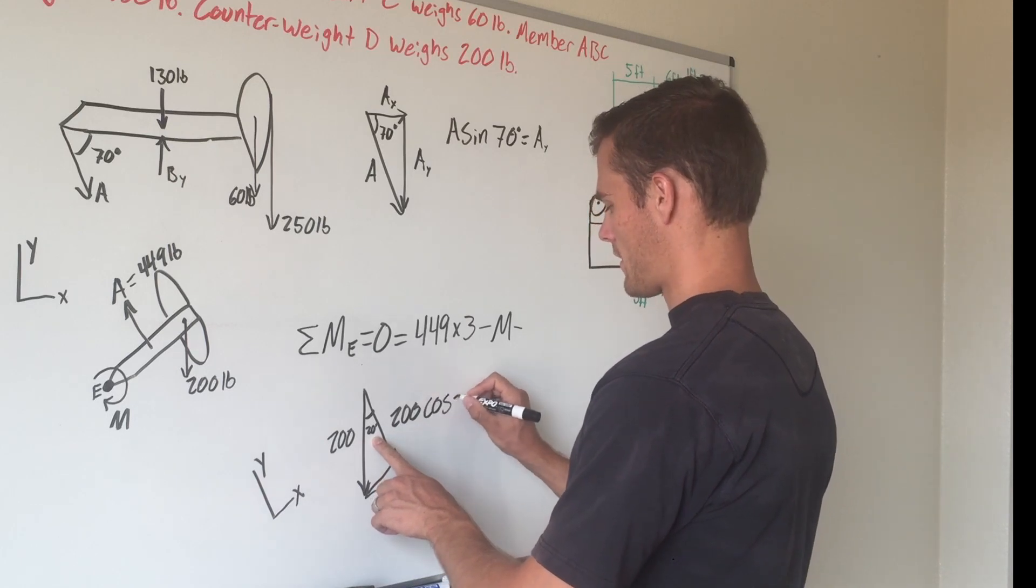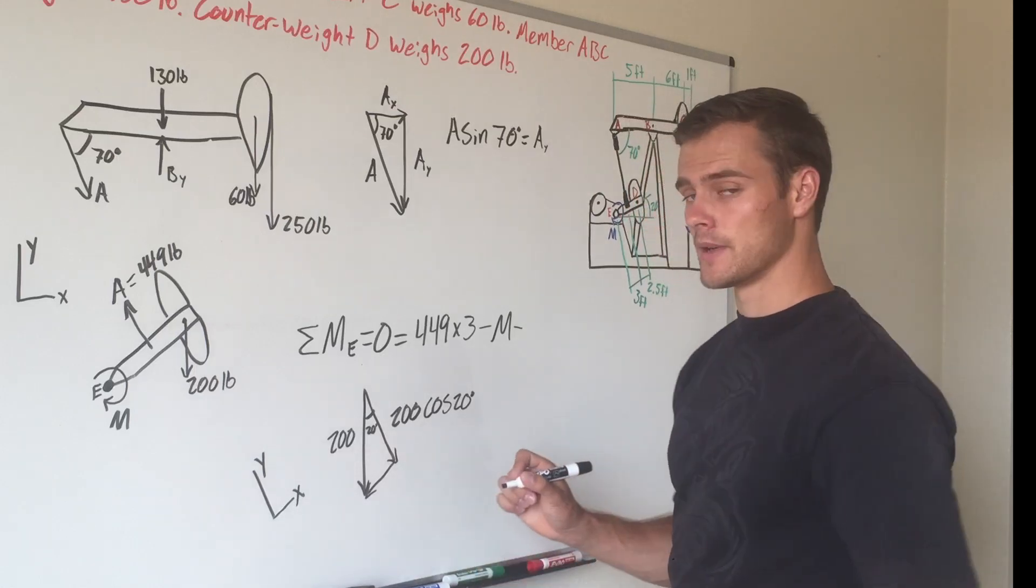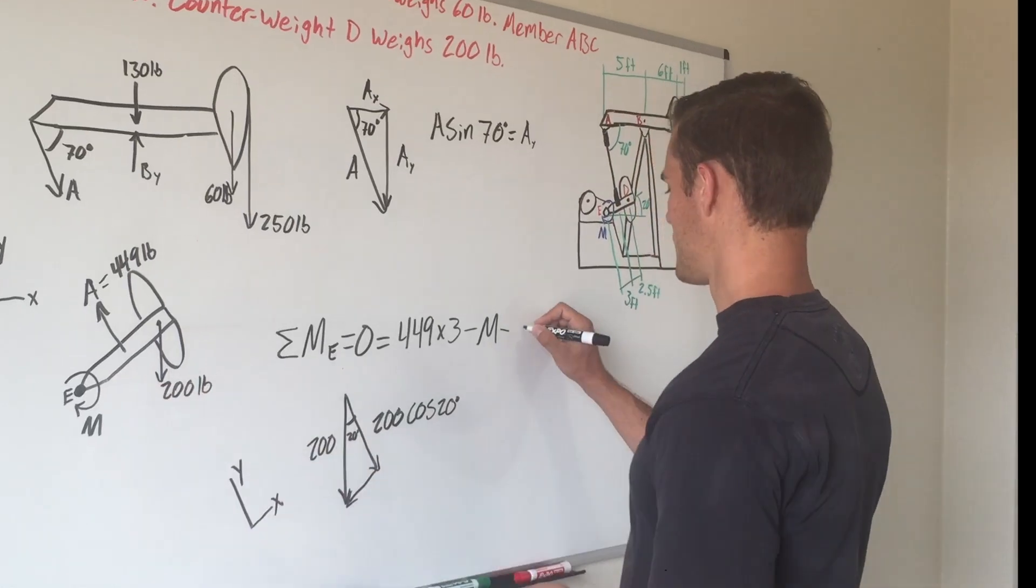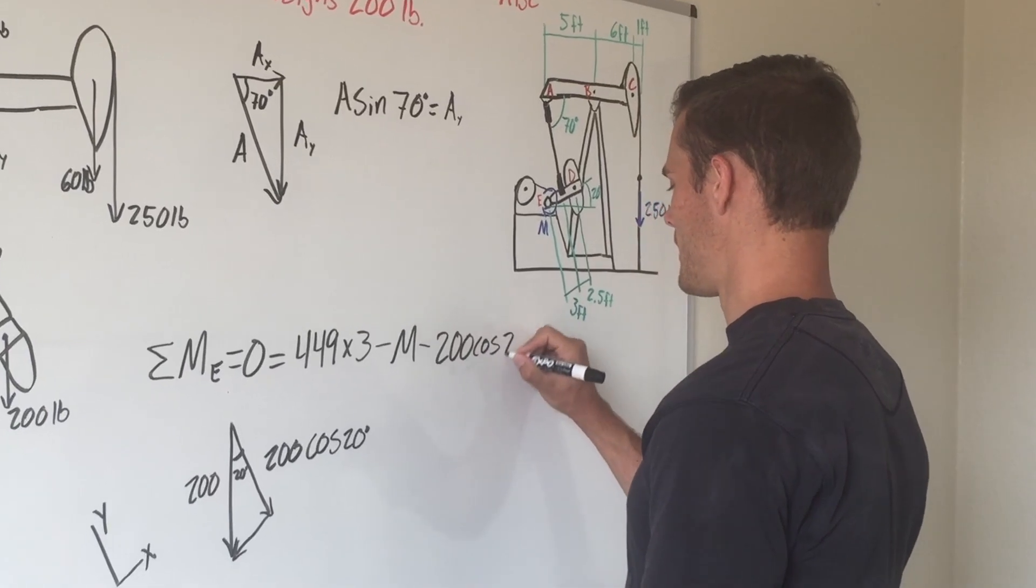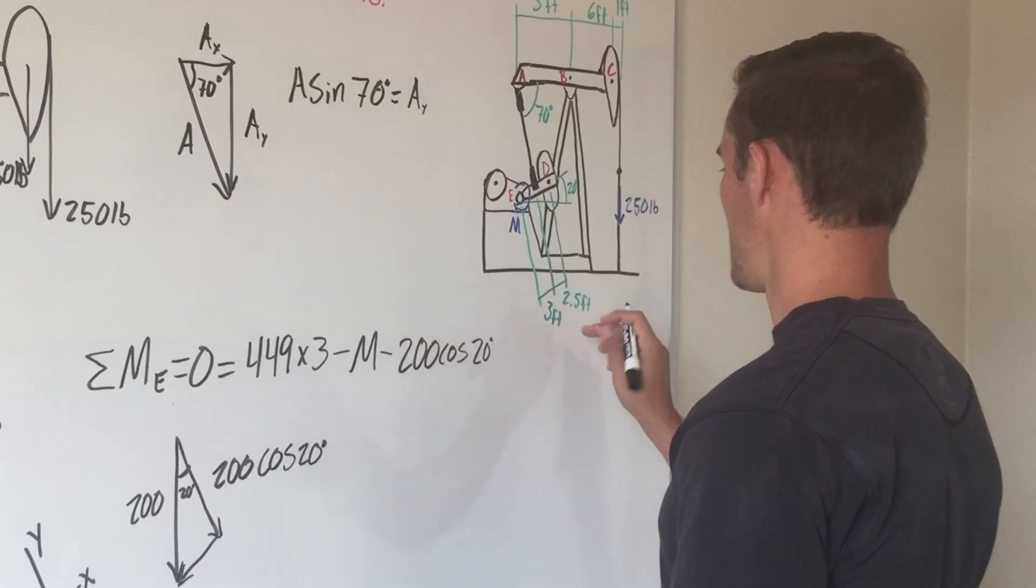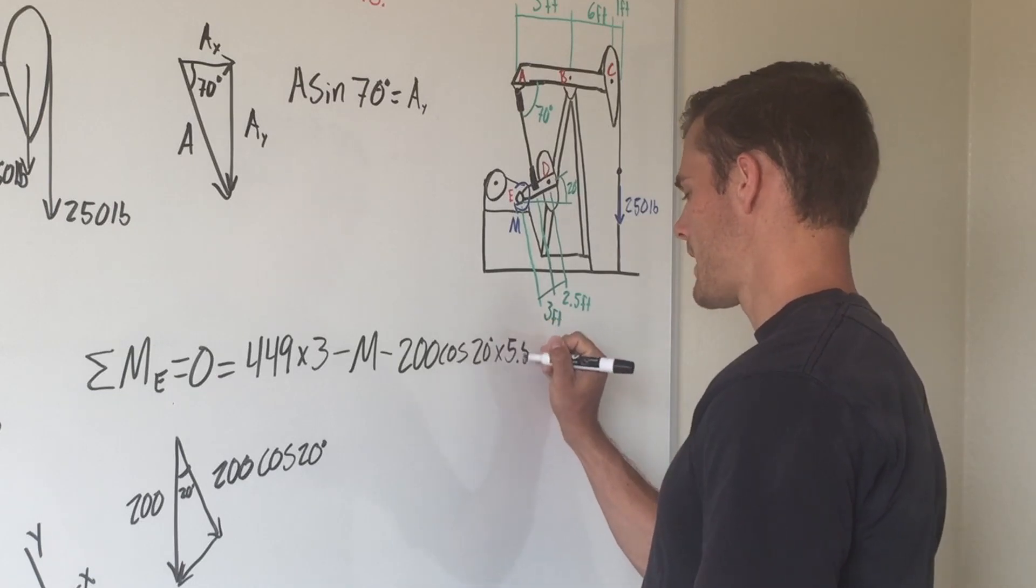That is your component perpendicular to your moment arm. So 200 cosine of 20 degrees, and that is 5.5 feet away, so multiply by 5.5.